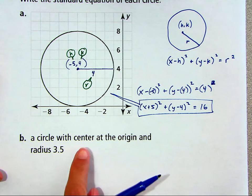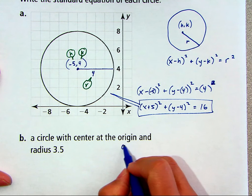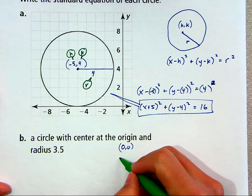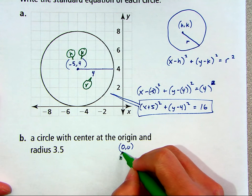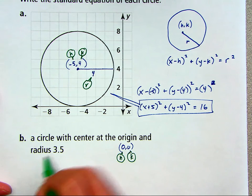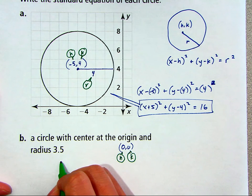Part B. A circle with center at the origin, which means the coordinates are 0, 0, and a radius of 3 and a half. Well, I don't have a picture, but I still have the information I need. I know the horizontal and vertical position of the center and the length of the radius. So I can label the first 0 as the h value, the next 0 as the k value, and then 3 and a half, that's the radius.